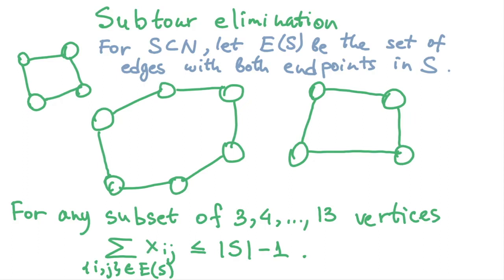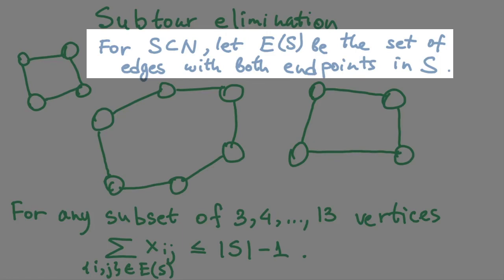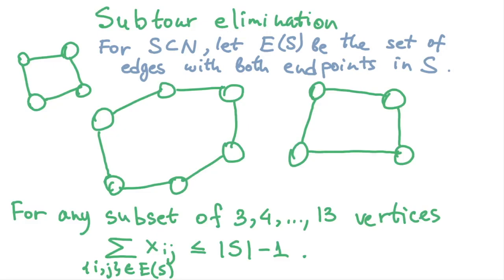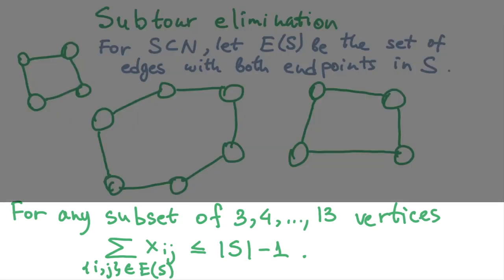But first let's introduce a notation we'll need. For a subset S of nodes, let E of S denote the set of those edges that have both endpoints in S. Then to eliminate a sub tour creating a cycle on the nodes from S we need to make sure that the number of edges from E of S that are included in the solution is less than the number of nodes in S, right? Yes, but we only need to require this for S that contains at least 3 nodes but not all the 14 nodes. Indeed, a sub tour with less than 3 nodes is impossible, and a sub tour of 14 nodes would be exactly the tour we are looking for. We certainly wouldn't want to eliminate it.